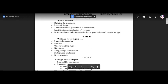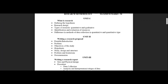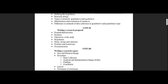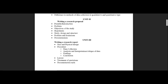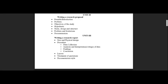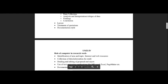In Unit 2, we have writing a research proposal: identification of area and topic, internet and web resources, collection of areas. Then we have the preamble, the introduction, the problem, the objectives, the study, the design, the structure, the limitations, the research report, the layout, the quotation, the treatment, and the documentation style. That's all in Unit 3.